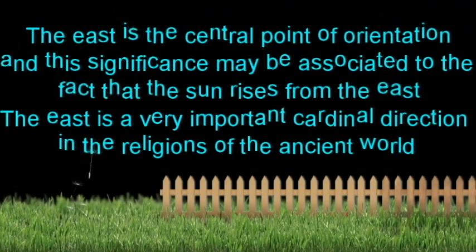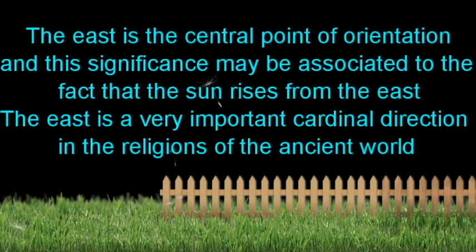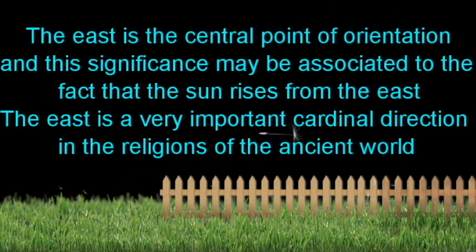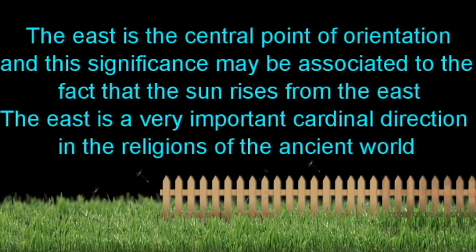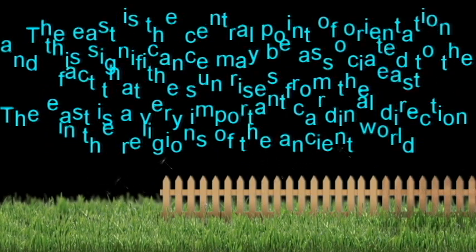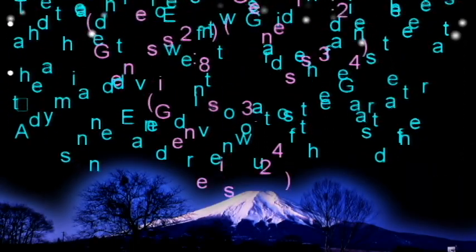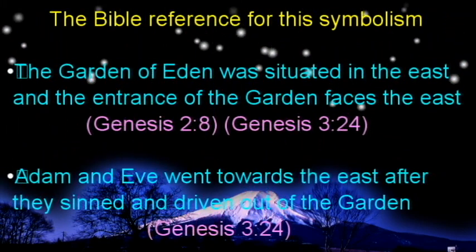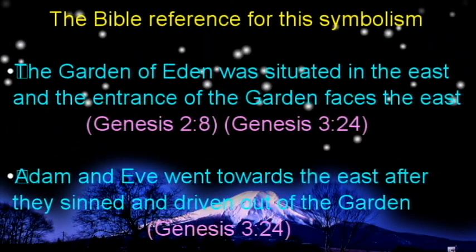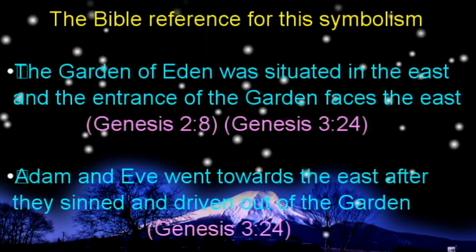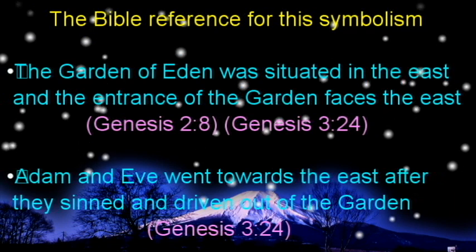The east is the central point of orientation, and this significance may be associated to the fact that the sun rises from the east. The east is a very important cardinal direction in the religions of the ancient world. The Garden of Eden was situated in the east, and the entrance of the garden faces the east.